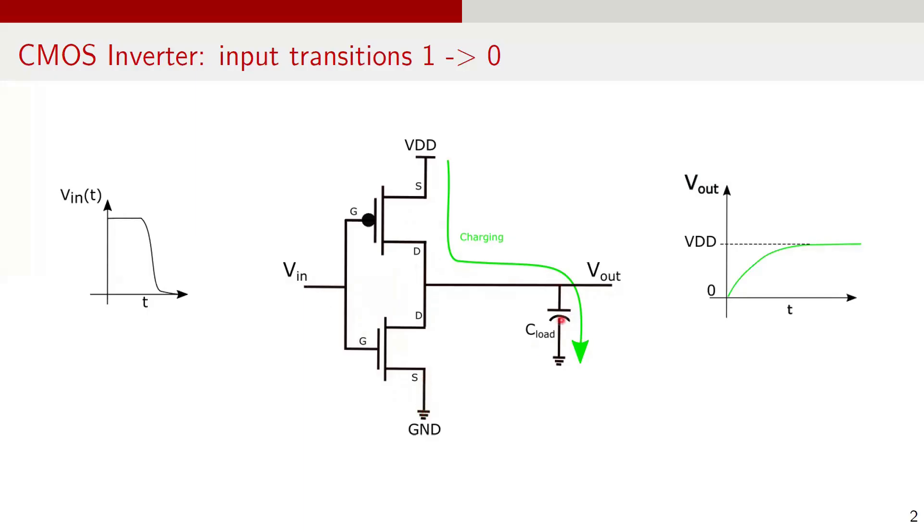A capacitive load denoted as C load is connected between output node Vout and ground. In this circuit, when the input transitions from 1 to 0, the PMOS gradually turns on while the NMOS gradually turns off and the capacitor C load charges up to VDD through the PMOS. The waveform shows the transition of the node Vout from 0 to VDD.